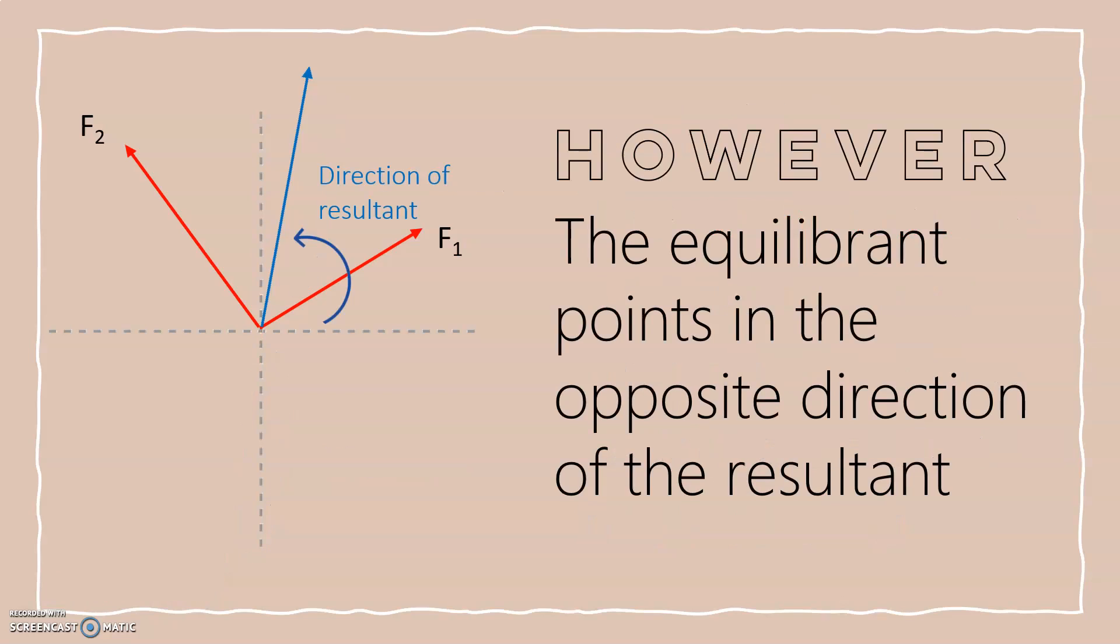But there's a catch. However, the equilibrium points in the exact opposite direction of the resultant. So the equilibrium is basically 180 degrees away from the direction of the resultant.